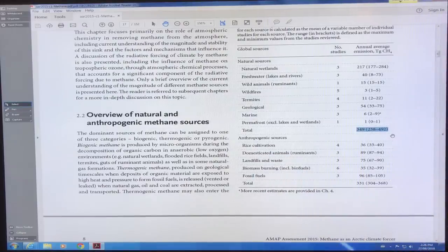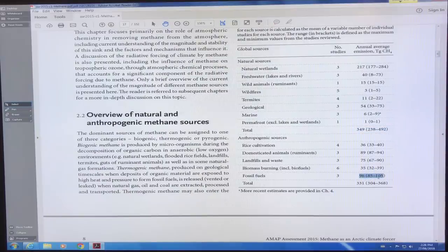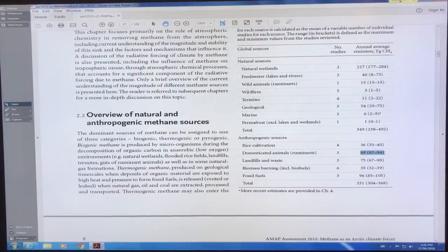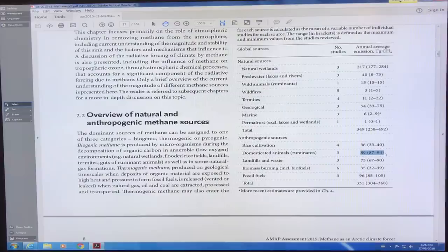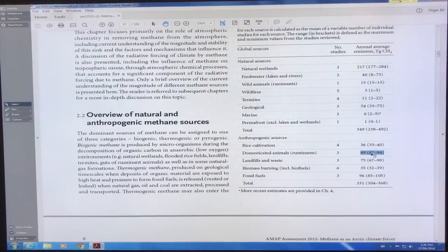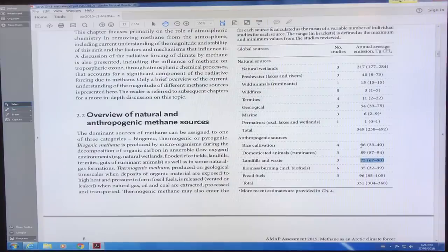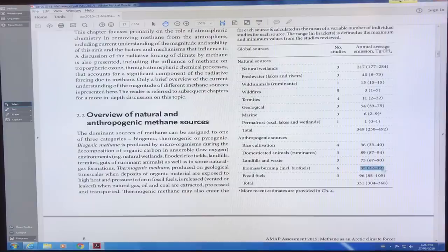The biggest here is fossil fuels of course, 96, but very close is domesticated animals so livestock. This is why if we all switched to be vegetarians there'd be a huge reduction of methane emissions. Landfills and wastes pretty high up there and then rice cultivation and biomass burning are also very high, they're comparable 35, 36.